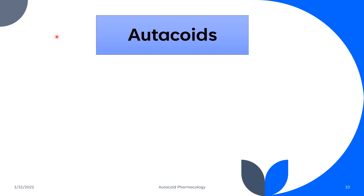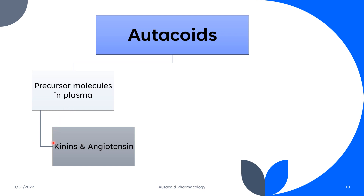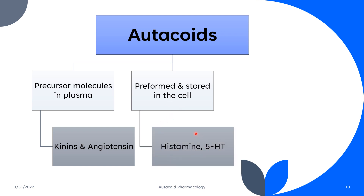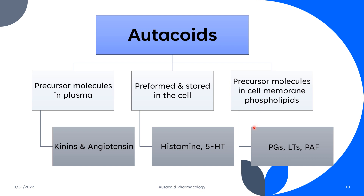Autacoids can also be classified based on their origin. The first group includes those derived from precursor molecules in the plasma, such as kinins and angiotensin. The second group includes those that are preformed and stored in the cell, such as histamine and serotonin (5-hydroxytryptamine). The third group includes those derived from precursor molecules in the cell membrane phospholipids, which includes eicosanoids — prostaglandins, leukotrienes, thromboxanes — and the platelet activating factor (PAF).